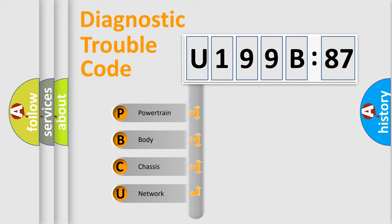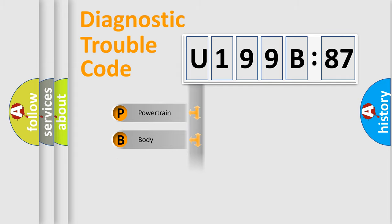We divide the electric system of the automobile into four basic units: Powertrain, Body, Chassis, and Network.